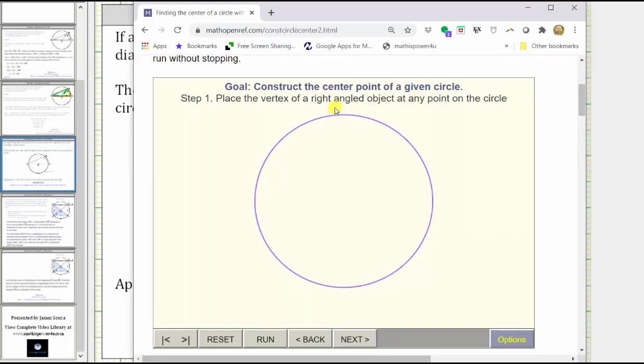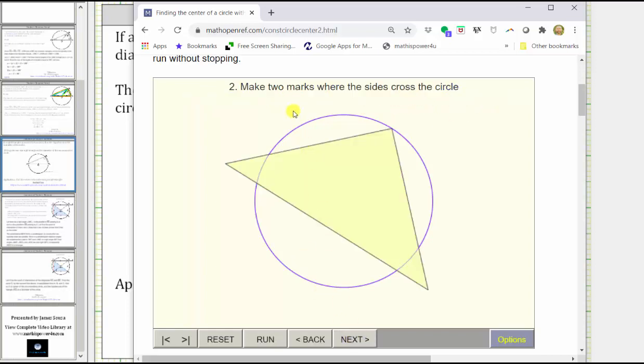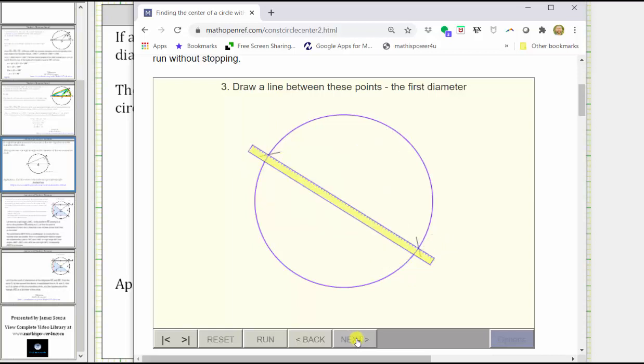We begin with a circle we want to find the center of. We place the vertex of a right angle object at any point on the circle. For example, here. Next, we mark two points where the sides of the right angle cross the circle, which are here and here. Next, we sketch the first diameter.